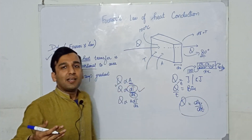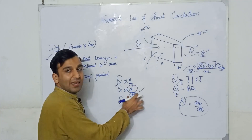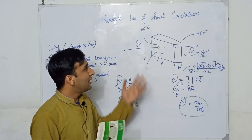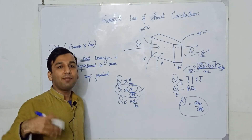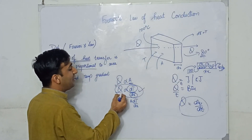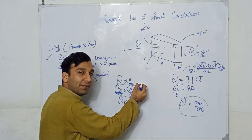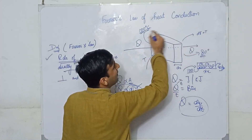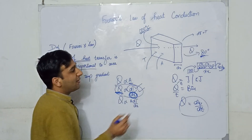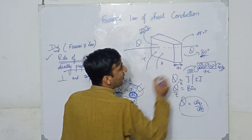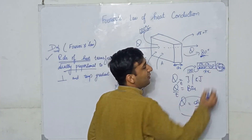So the temperature gradient is the temperature difference divided by the length or thickness, because conduction happens mostly in solids. This is the temperature gradient. The rate of heat transfer is directly proportional to temperature gradient, which itself is directly proportional to temperature difference delta T, and inversely proportional to the length or width of the wall — the more the width, the more atoms absorb the heat and the less temperature you get on the other side.